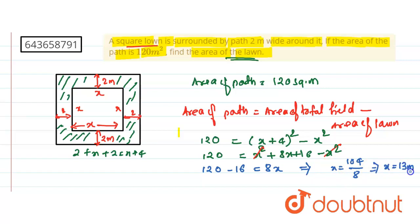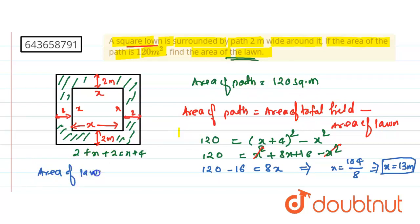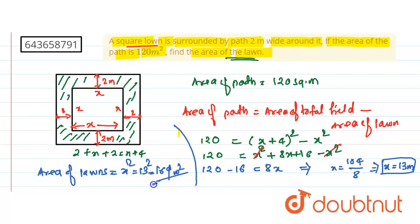x = 13 meters. So the side of the lawn is 13 meters. Therefore, the area of the lawn is x² = 13² = 169 square meters. So this is my answer to this question. Hope you have understood.